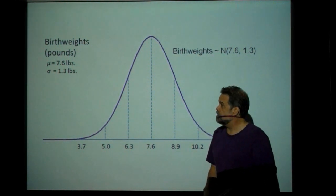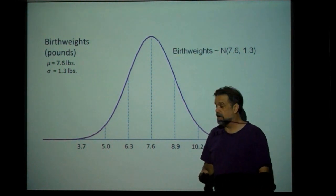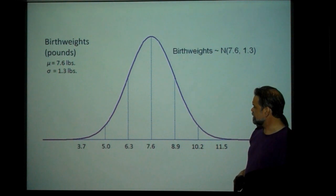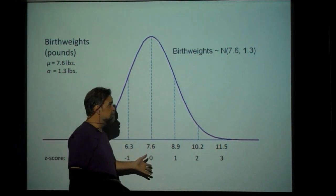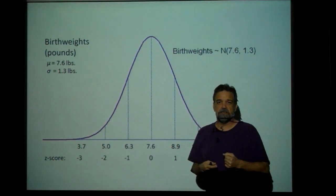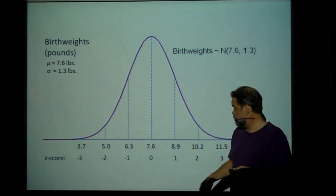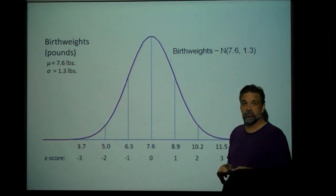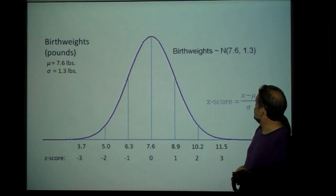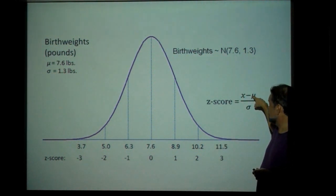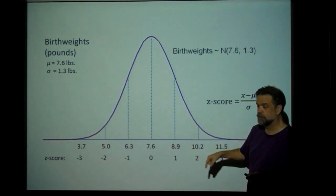Birth weights: the weights of newborn babies are approximately normally distributed with a mean of 7.6 pounds and a standard deviation of 1.3 pounds. Here's our model for birth weights. Now let's talk about z-scores. A z-score tells you how many standard deviations greater or less than the mean a particular data point is. A baby born at 8.9 pounds has a z-score of 1, because the baby is exactly one standard deviation above the mean. A baby weighing 10.2 pounds has a z-score of 2. The formula: z equals the data point minus the mean, divided by the standard deviation — so 10.2 minus 7.6 is 2.6, divided by 1.3, equals 2.